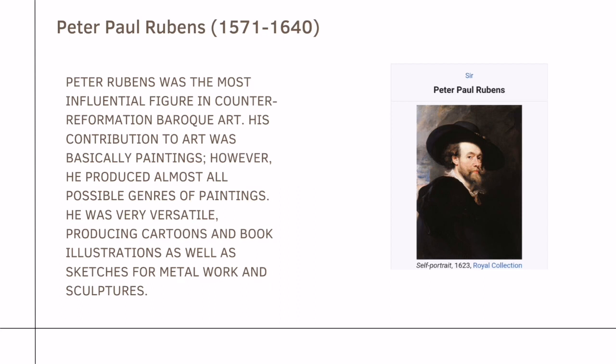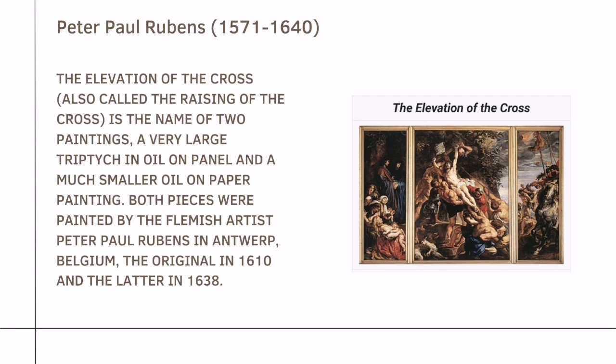Next here is Peter Paul Rubens. Peter Rubens was the most influential figure in Counter-Reformation Baroque art. His contribution to art was basically paintings; however, he produced almost all possible genres of paintings. He was very versatile, producing cartoons and book illustrations as well as sketches for metalwork and sculptures. His famous work is The Elevation of the Cross, also called the Raising of the Cross — the name of two paintings: a very large triptych in oil on panel and a much smaller oil on paper painting. Both pieces were painted by the Flemish artist Peter Paul Rubens in Antwerp, Belgium — the original in 1610 and the latter in 1638.